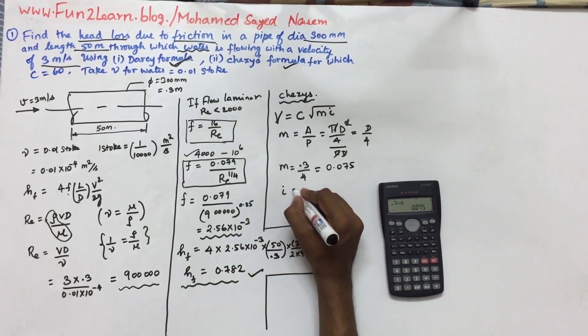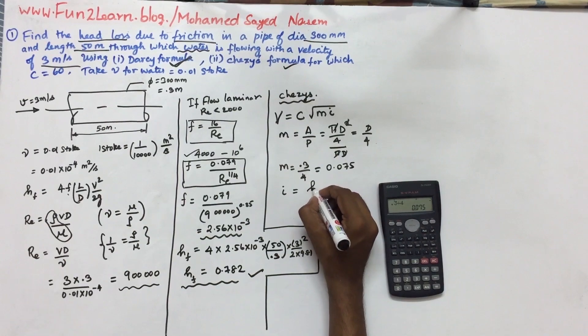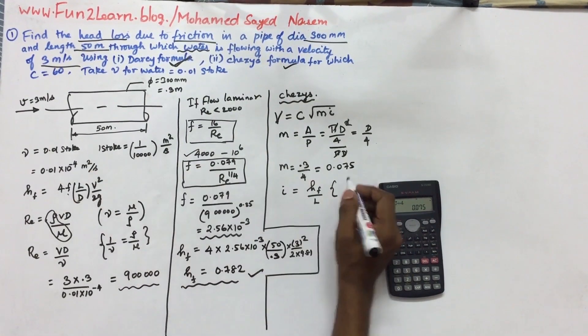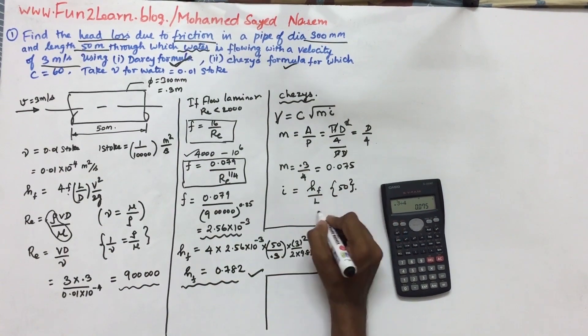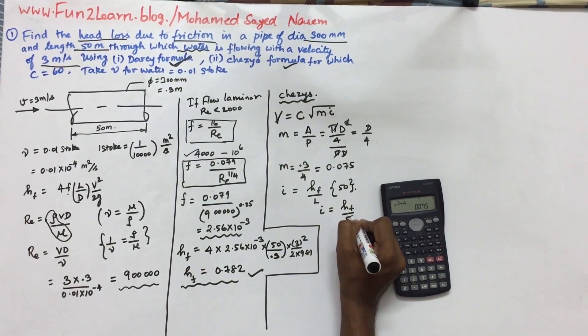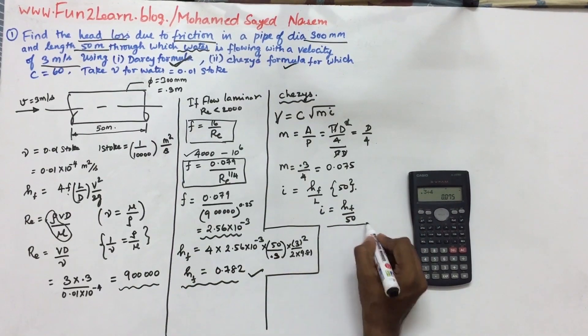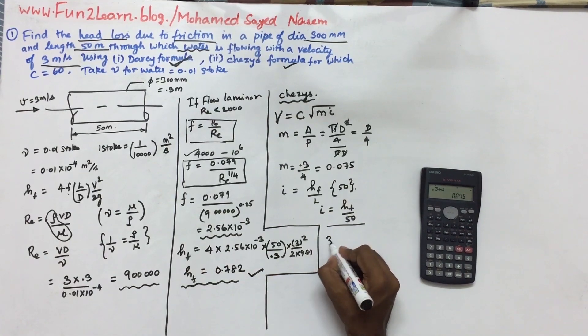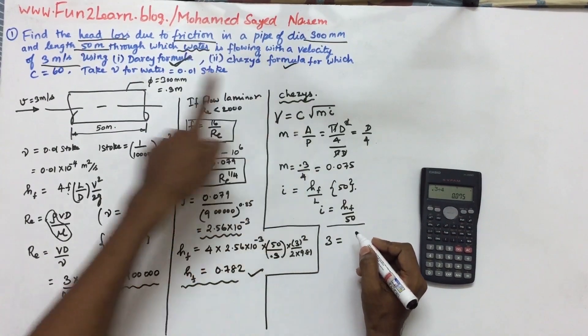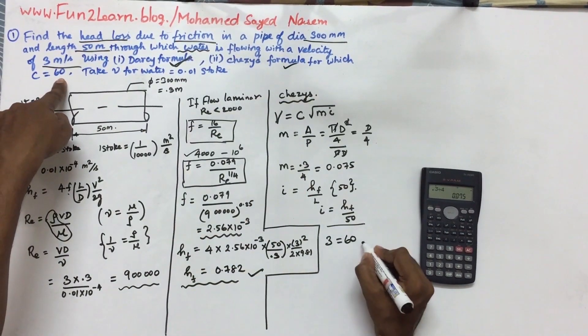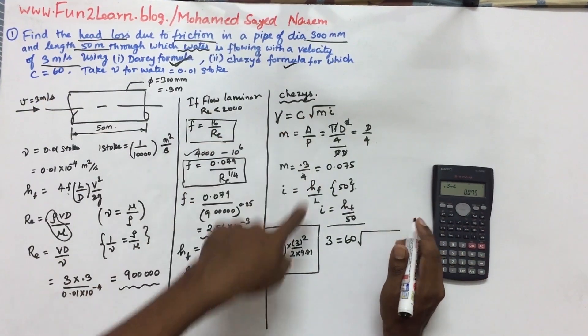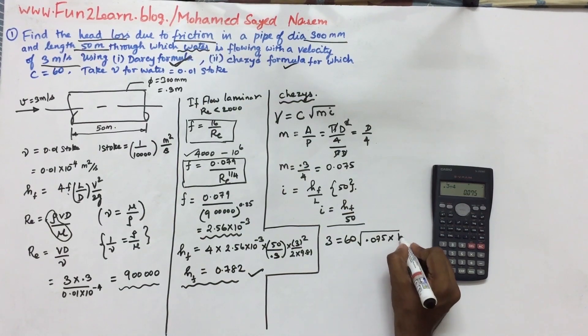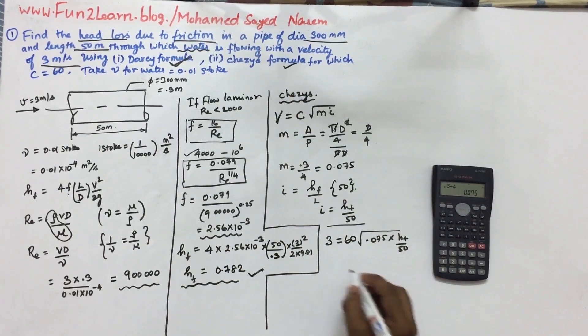So i is the head loss due to friction per length. Length is 50, so i equals hf by 50. Now substitute in the formula. Velocity is 3, Chezy constant is 60, m value is 0.075, into hf by 50.